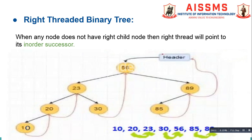Similarly, 10 does not have any child nodes, so we draw a right thread from 10 to its inorder successor, which is 20. Node 30 does not have a right child and its inorder successor is 56, so the right thread from 30 will point to 56. Similarly, 85 does not have a right child and its inorder successor is 89, so the right thread from 85 will point to 89. Node 89 does not have a right child and also does not have an inorder successor, so its right thread will point to the header.